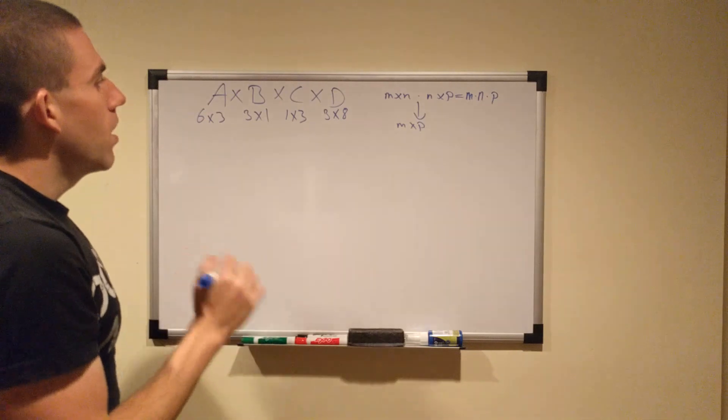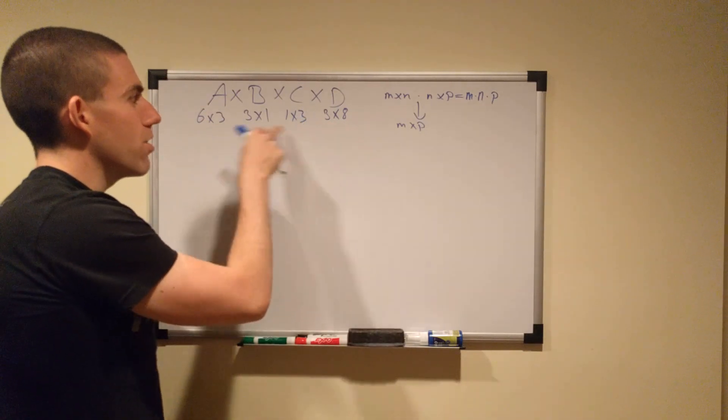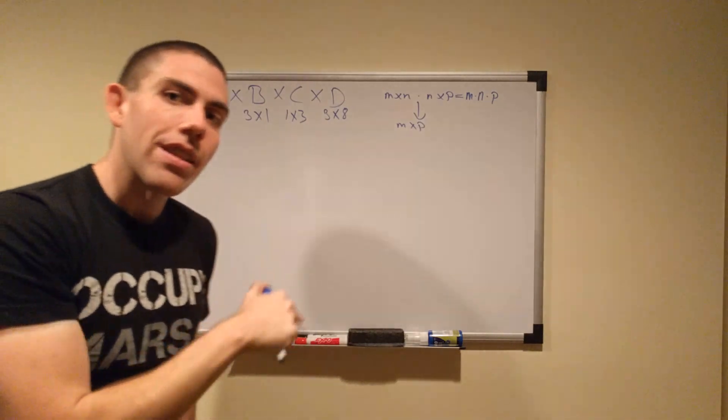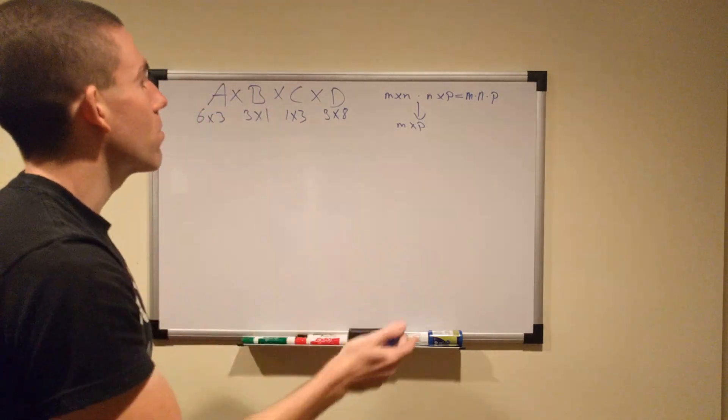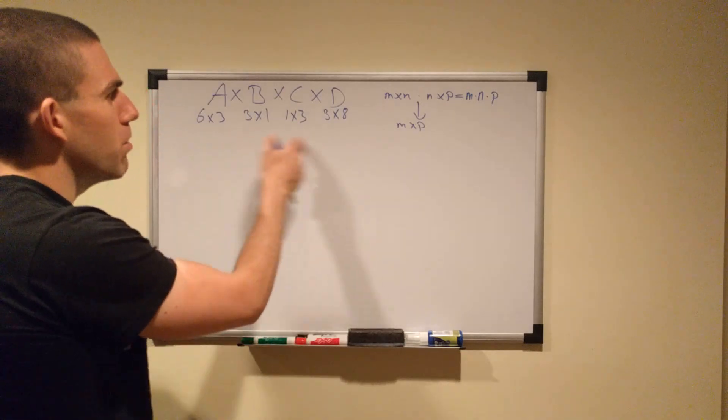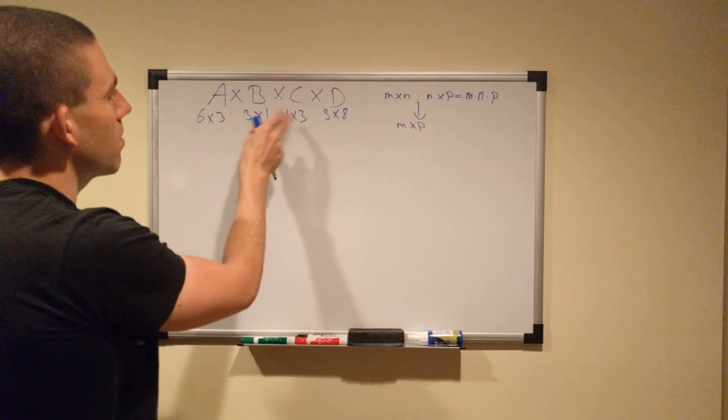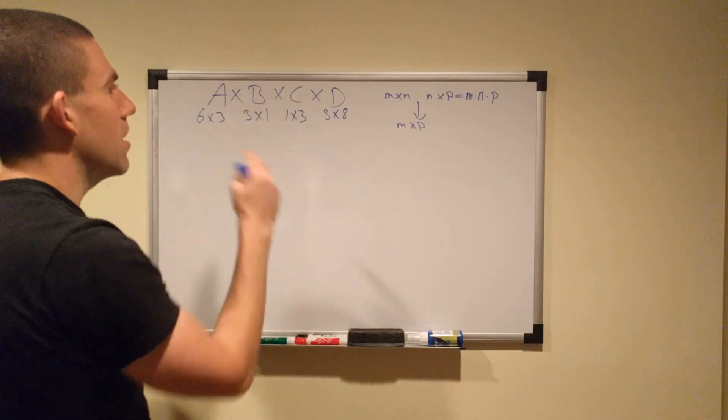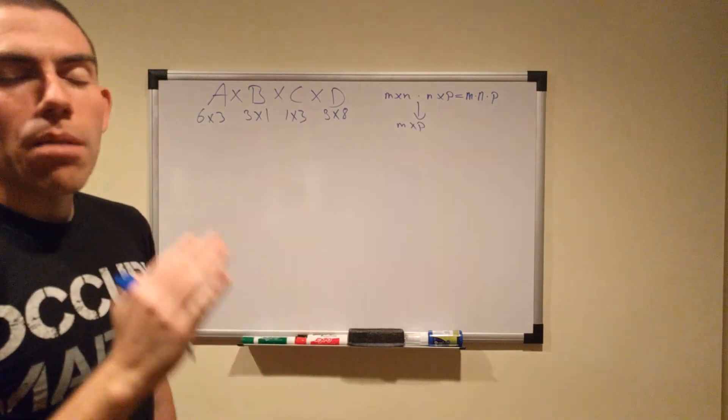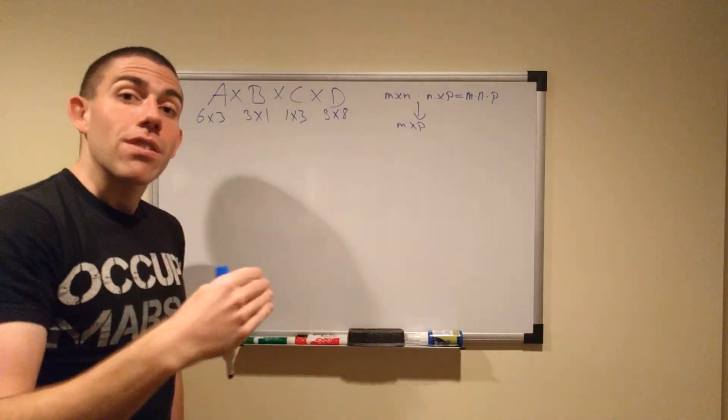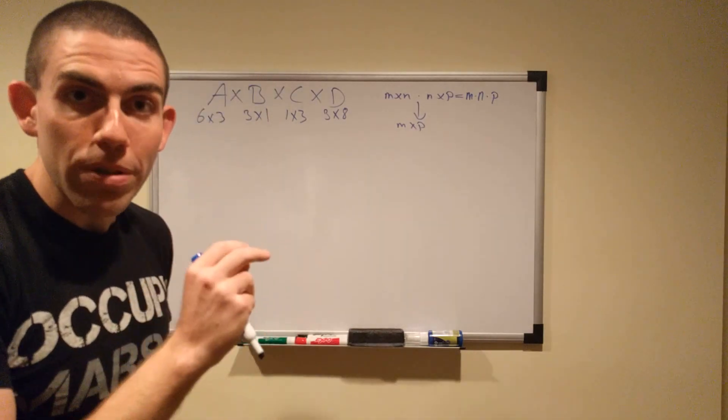So the question is, is there an order of parenthesization that costs less than the other ones? So obviously, if you have some set of matrices, there's any number of ways that we can permute the parentheses. We can put them around B and C, and then start with that, and then multiply A and D in, or we can start with A and B and just do it to C and D. So basically, any number of ways, but what we're trying to figure out is, is there one specific way that is cheapest? Or maybe there's some set of ways that are all the cheapest.